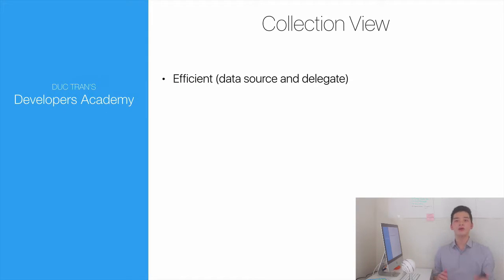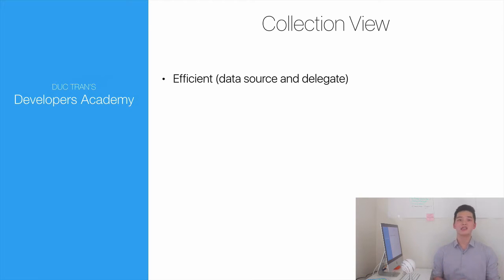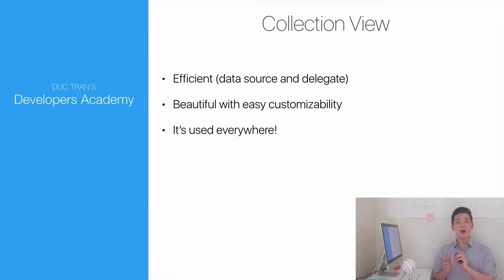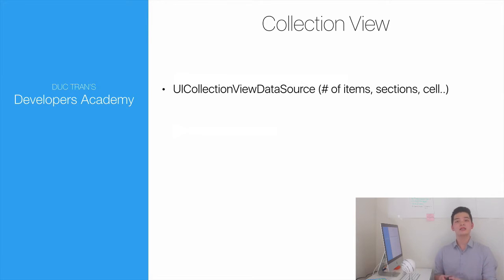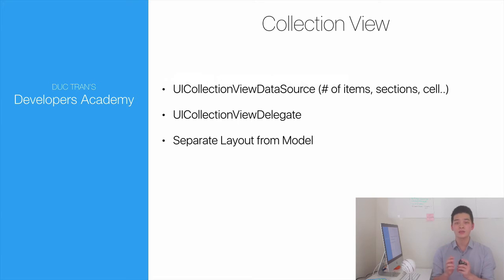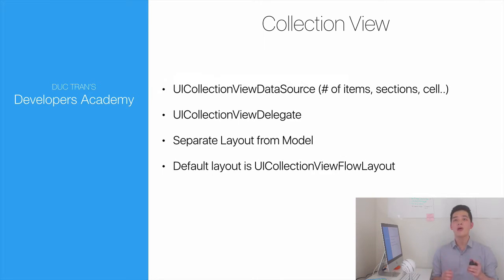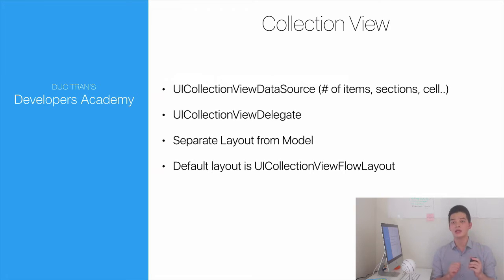In this course, I want to teach you all things about collection view. Collection view is very, very efficient. The reason behind that is that it uses the same model — data source and delegate — as a UITableView. Collection view is also very customizable because the layout of the collection view, which is the UI, is separate from the data. What powers the layout is a layout object. By default, it is a UICollectionViewFlowLayout. So keep in mind: a collection view has a data source, a delegate, and a flow layout object.